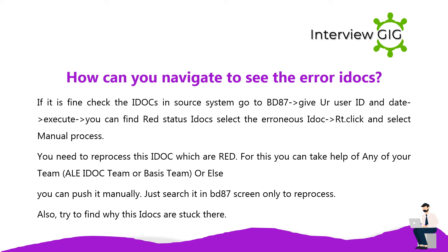How can you navigate to see the error IDocs? If it is fine, check the IDocs in the source system. Go to BD87, provide a user ID and date to execute. You can find red-status IDocs; select the erroneous IDoc, right-click, and select manual process — you need to reprocess the IDocs that are red. For this you can take help from your IDoc team or basis team, or push it manually via the BD87 screen. Also try to find why these IDocs are stuck.